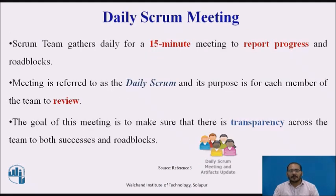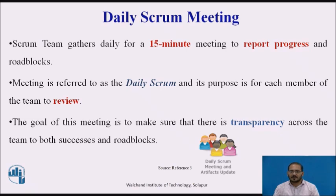During the course of the sprint, the sprint team gathers daily for a 15-minute meeting to report progress and roadblocks. This meeting is referred to as the daily Scrum. Its purpose is for each member of the team to review what was accomplished towards the sprint goal since the last meeting, what is to be accomplished by the next meeting, and to identify any obstacles. The goal is to ensure transparency across the team regarding both successes and roadblocks. The daily Scrum is not intended to solve issues during the meeting but to expose them to the entire team and schedule time to work on them.